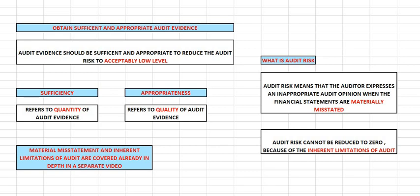Audit evidence should be sufficient and appropriate. The question comes: what do you mean by sufficient, and what do you mean by appropriate? Sufficiency refers to the quantity of audit evidence — how much quantity. Appropriate refers to quality — how good is it? Is the audit evidence of good quality, reliable quality, or not?